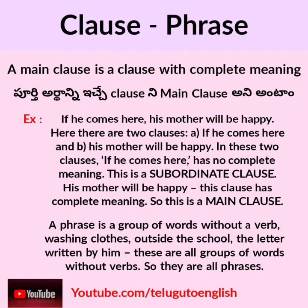A phrase is a group of words without a verb. For example: 'washing clothes outside the school,' 'the letter written by him.' These are all groups of words without verbs, so they are all phrases.